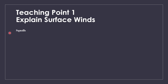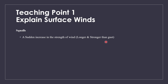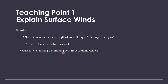You also have squalls. Squalls are basically a sudden increase in the strength of wind — they are longer and stronger versions of gusts. Gusts don't last that long, but squalls can last for hours. They may also change direction, just like a gust, and they're caused by a passing cold front or a thunderstorm. These are also things you want to be avoiding for your safety.